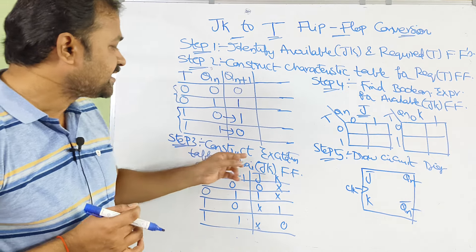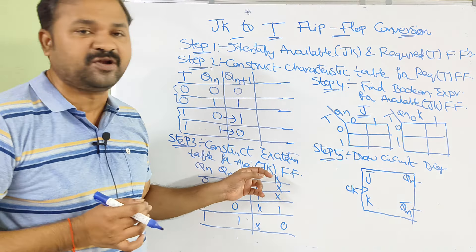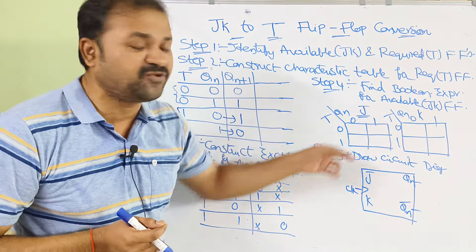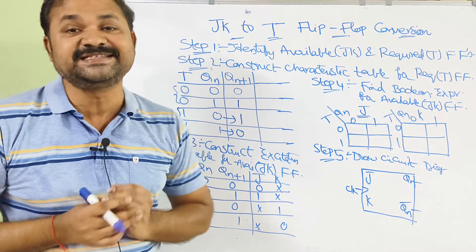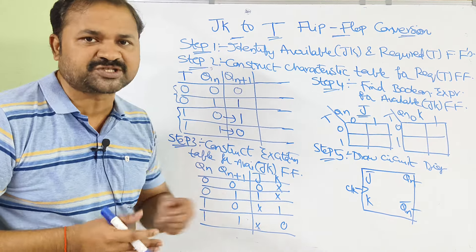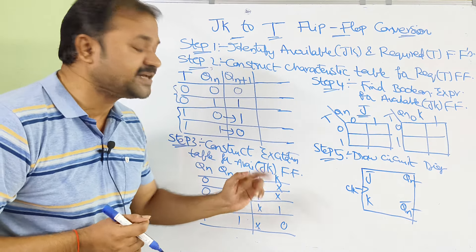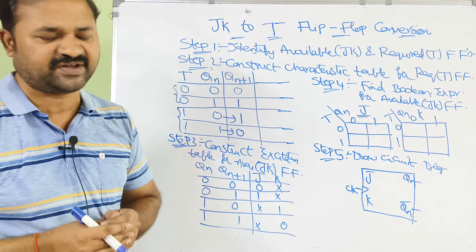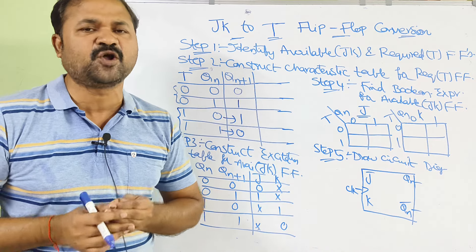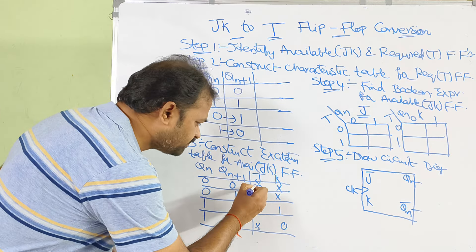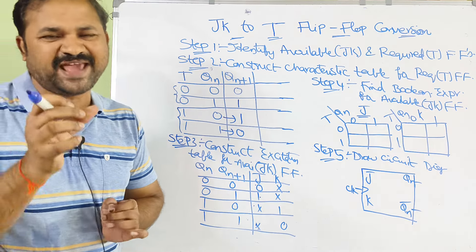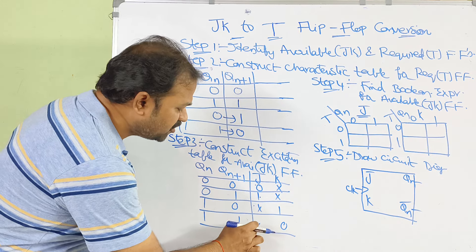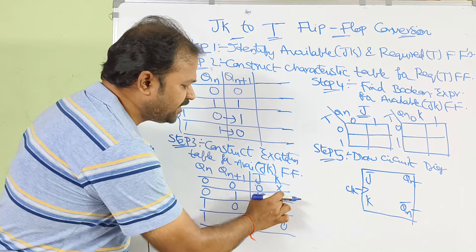Now let us see step 3: construct the excitation table for the available flip-flop, that is the JK flip-flop. Here we have 2 inputs, Qn and Qn+1, whereas J and K are the outputs. With 2 inputs we have 4 combinations. The excitation table for the JK flip-flop is very simple — if we observe the J column: 0, 1, don't care, don't care. Whereas K is the reverse of the J column: don't care, don't care, 1, 0.